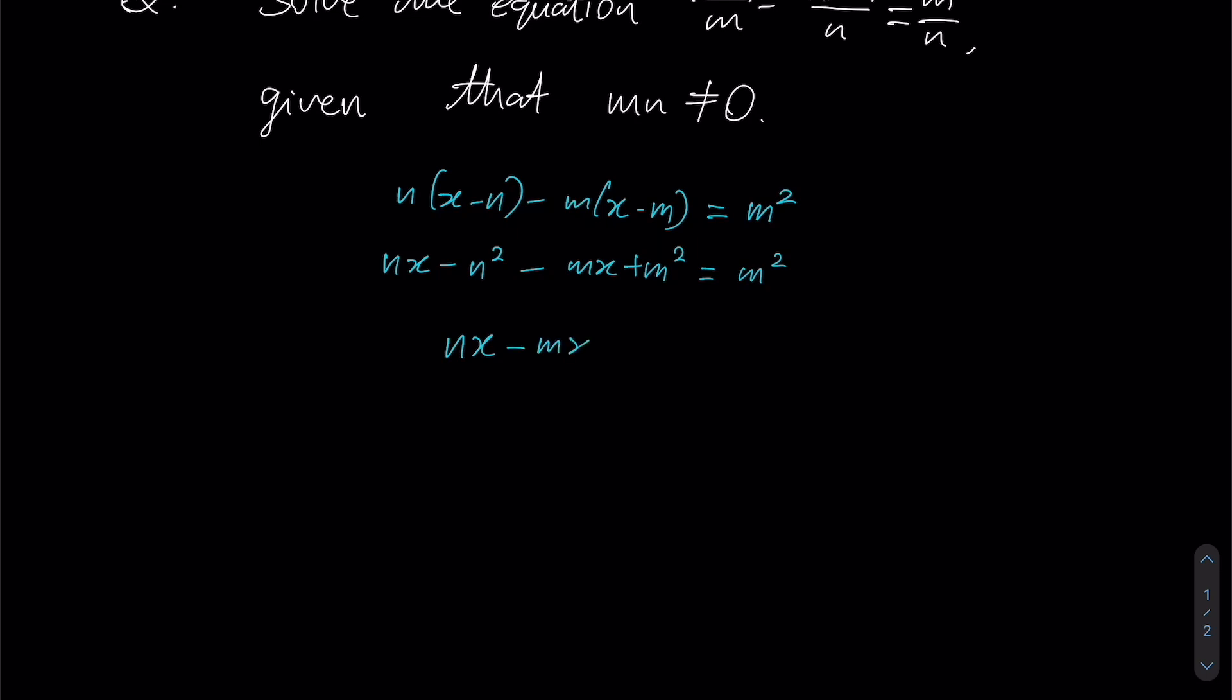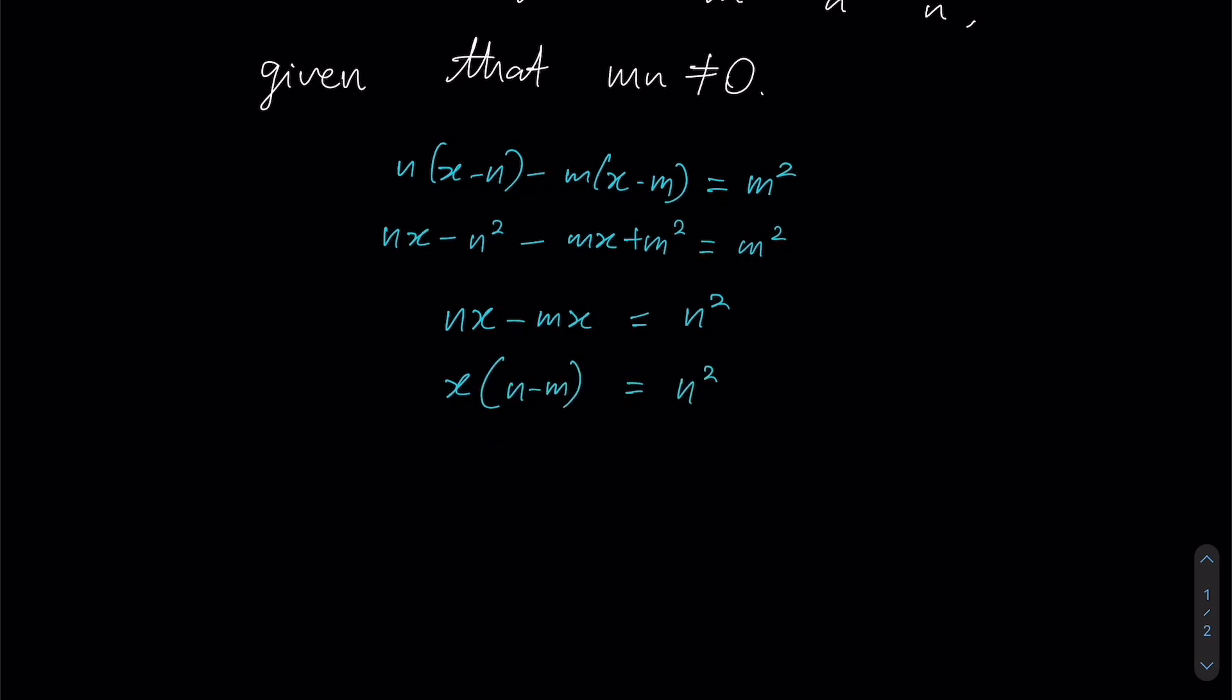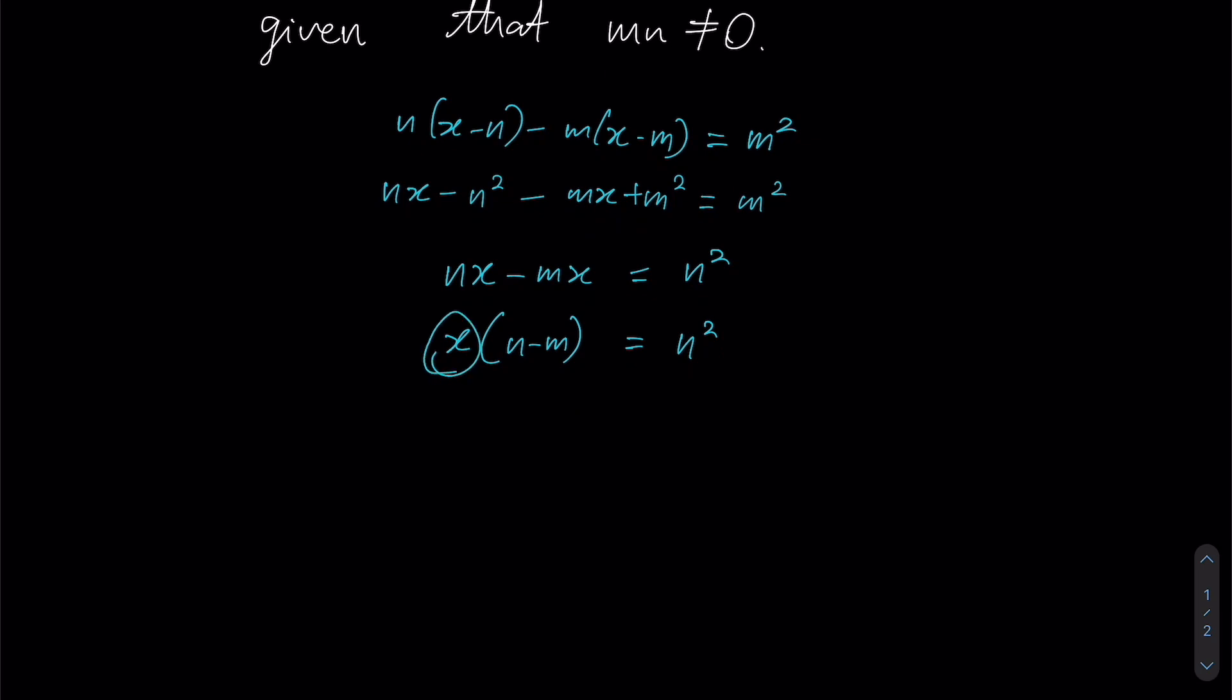Let us try to group the x terms together. And we are going to shift negative n square to the other side to give positive n square. Since we are trying to find a solution for x in terms of n and m, we are going to try to factorize this expression here to this form, such that we can make x the subject of the formula for this equation.